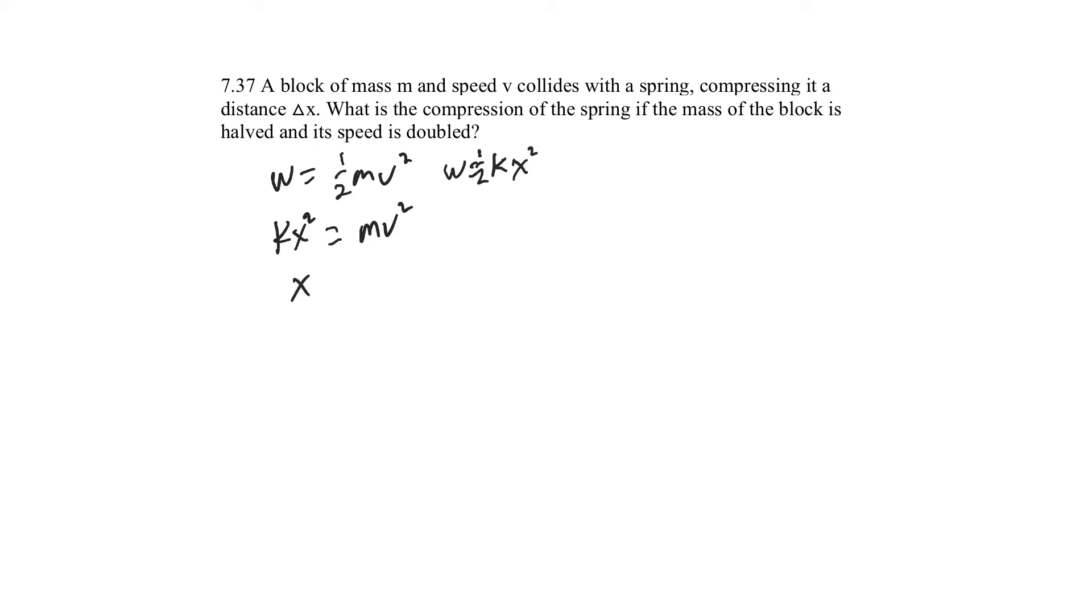So let's first of all solve for x. I'm going to put the k on the bottom. I'm going to have m. I'm going to double the speed, so it's 2v. I'm going to halve the mass, so that divide by 2, and then there's a k here as well.